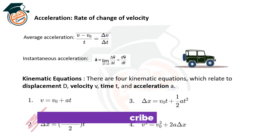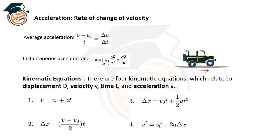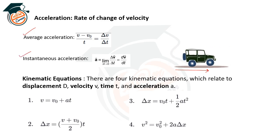Acceleration is the rate of change of velocity. When a body's velocity changes, that rate of change is acceleration. Average acceleration is given by Δv / Δt, which is final velocity minus initial velocity divided by change in time. Instantaneous acceleration is the derivative of velocity with respect to time.